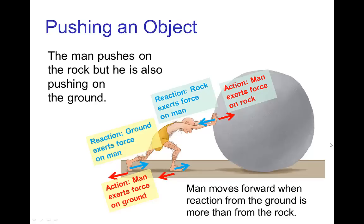Another example of action-reaction in character animation is when a character is pushing on an object. When a character like this man pushes on a rock, he's exerting a force on the rock and the rock exerts a reaction force back on him. If that were the only force on him, he would move backwards — but he also exerts a force with his feet.